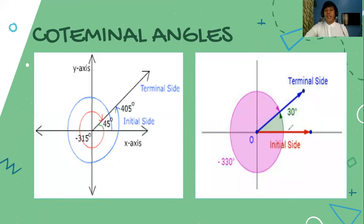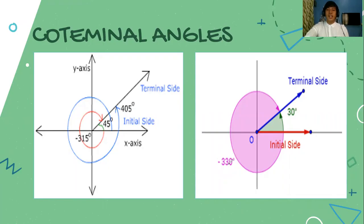The given angle is a 30-degree angle. Since it does not exceed 360 degrees, there is still a corresponding negative coterminal angle by subtracting 360 degrees. So 30 minus 360 degrees gives the coterminal angle of negative 330 degrees. Notice that the 30-degree angle and the negative 330-degree angle share a common terminal side, and both of them are in standard position with the same initial side.